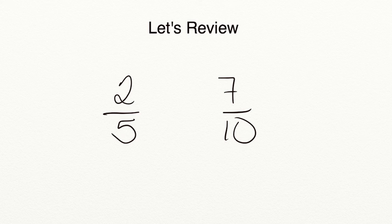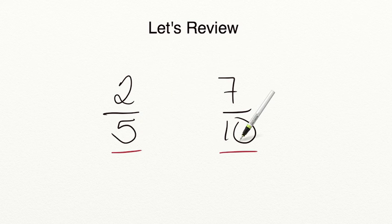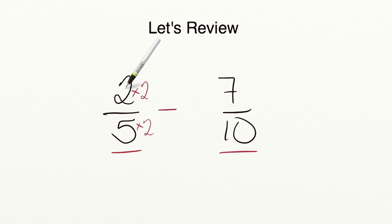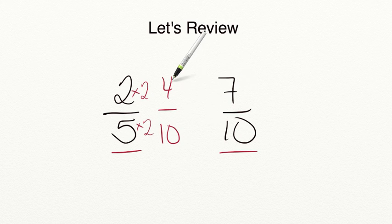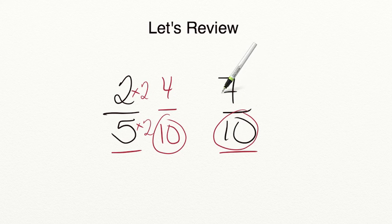Let's review what you've learned. When comparing fractions, first look at the denominators. If the denominators are the same, compare your numerators. If the denominators are different, find a common denominator. For example, since fifths and tenths are different denominators, we multiply two-fifths by two: two times two equals four and five times two equals ten. Now comparing four-tenths to seven-tenths, we can see that seven-tenths is greater than four-tenths.